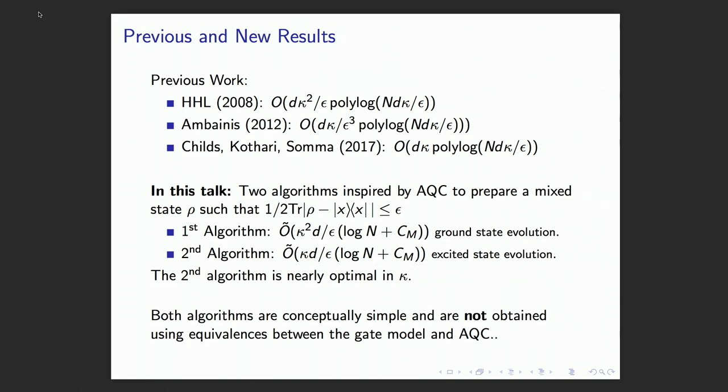In this talk, I will tell you about two new algorithms that we developed, which prepare a mixed state that is close in trace distance to the state we are trying to prepare, which is X. The first algorithm will scale like condition number squared. In this algorithm, we will follow the ground state of a parametrized Hamiltonian, much like most of the AQC algorithms do. I will present the second algorithm that is nearly optimal, hence linear in kappa scaling, where we will follow an eigenstate that lies in the middle of the energy spectrum, an excited state. I want to emphasize that both of these algorithms are completely unrelated to the previous algorithms and are not obtained using the equivalences between gate model and AQC.